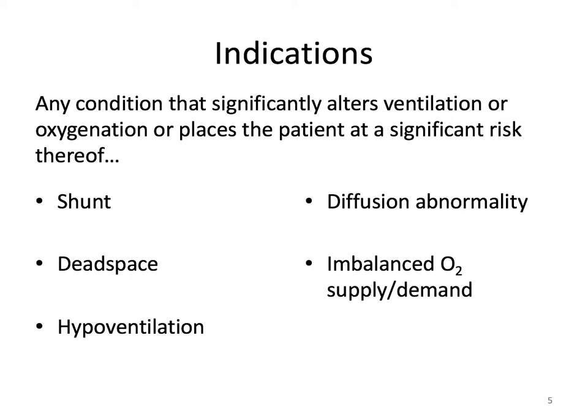In a shunt, there's adequate ventilation with inadequate perfusion — air is getting to the alveolo-capillary membrane but is having difficulty crossing into the bloodstream. A shunt can be intracardiac, for instance with any of the cardiac shunts discussed in the pediatric cardiology lecture, or intrapulmonary, for instance with acute respiratory distress syndrome or pulmonary hypertension.